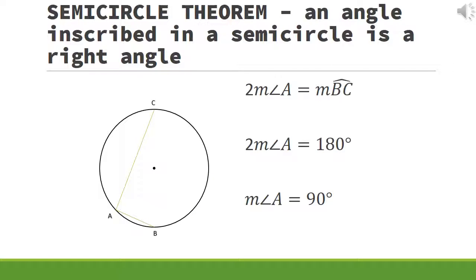The next theorem is the semicircle theorem. An angle inscribed in a semicircle is a right angle. In our example below, twice the measure of angle A is equal to the measure of semicircle BC. So, twice the measure of angle A is equal to 180 degrees, and we can conclude that the measure of angle A is equal to 90 degrees.